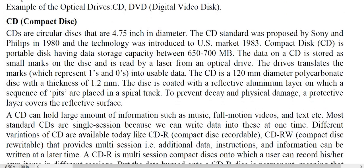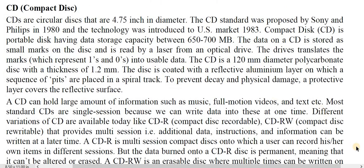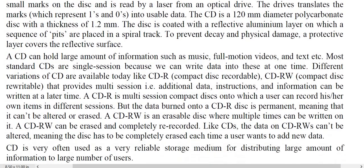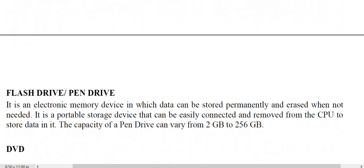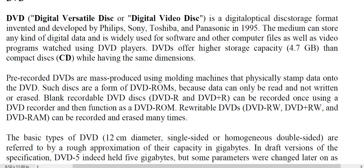Compact disks are circular disks 4.75 inches in diameter and can store 652–700 MB. They are widely used and a reliable storage medium for distributing large amounts of information to many users. Flash drives or pen drives are more widely used today — they are very portable, small in size, and have capacities ranging from 1 GB to 256 GB.